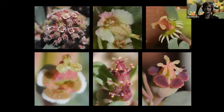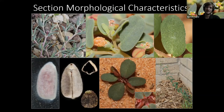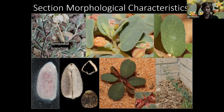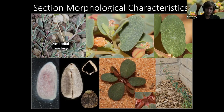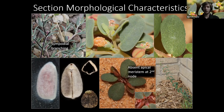There's a lot of diversity in cyathium structure — these are all from section Anisophyllum. Some species have these large showy appendages on the glands, and some don't. These are commonly called glandular appendages or petaloid appendages. Now let's get into the characteristics of the section. There are a lot of characteristics that set this apart from the rest of the genus. The first one is sympodial branching, where you have a stem that terminates in a structure and then branches out from axillary branches.